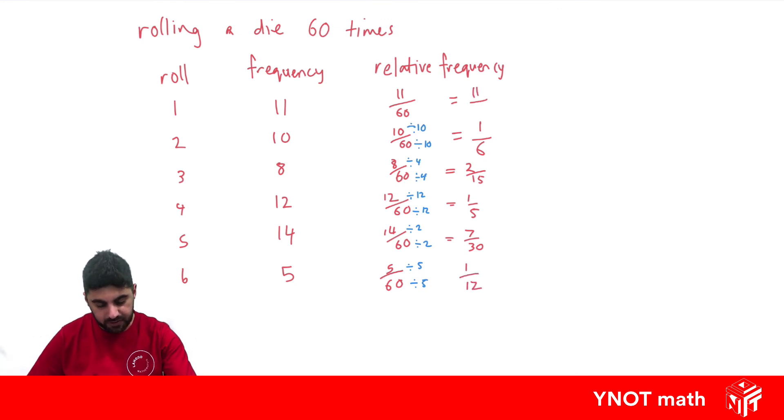So that one just stays as 11 over 60. And if you add up all the relative frequencies, you should get 1.